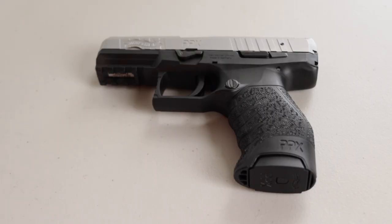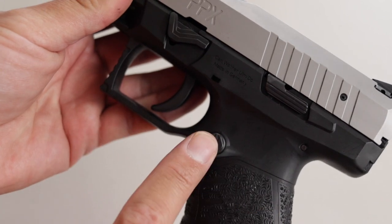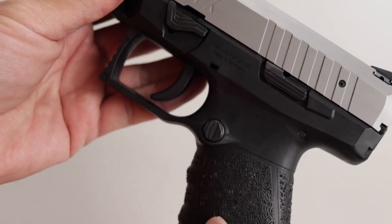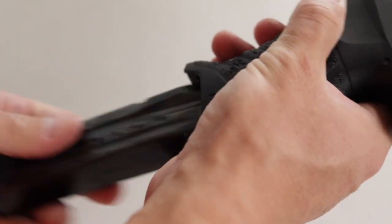Always start out with a clear and empty weapon. Keep it pointed in a safe direction, even if you think it's unloaded. And of course, we're going to double-check and make sure it's unloaded before we get started here. To do that, press the magazine release button located on the left-hand side of the weapon, just behind the trigger guard. Drop the magazine.